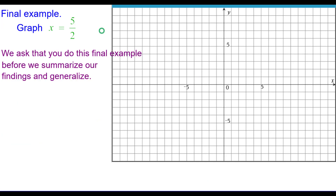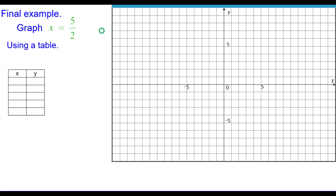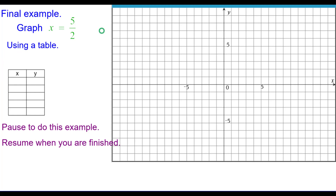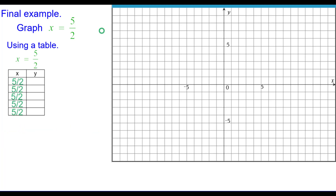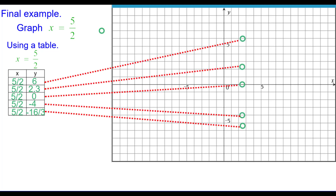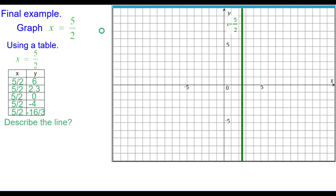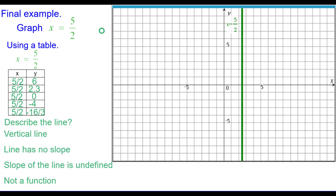A third example: we're going to ask that you do this final example before we summarize our findings and generalize, using a table. Pause to do this example and resume when you're finished. So using a table, we put in 5 halves for the x-coordinate, and then we can put in any values we want for the y-coordinate because it only says x has to be 5 halves. We'll plot them and connect the points. The line is vertical, with no slope or undefined slope, and it is not a function.